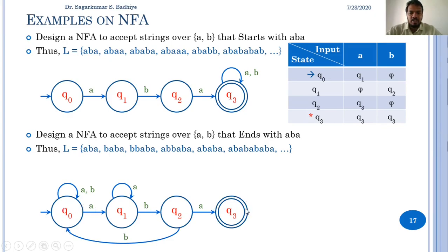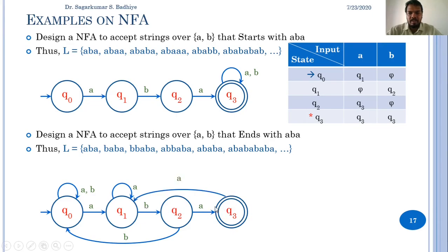In q3, if A is the input, we should go to a state such that reading BA next will reach the final state again. So on A from q3, we go to q1, so that after reading BA it reaches q3 again — meaning the last four characters would be ABBA.